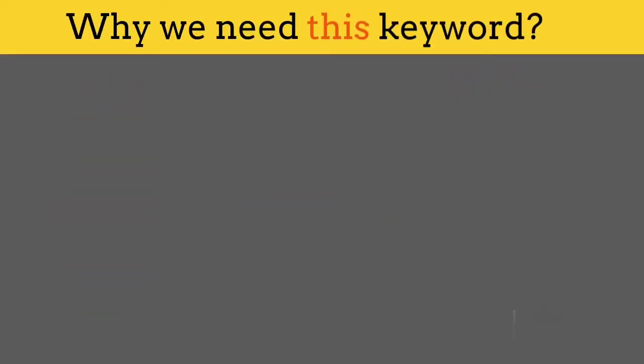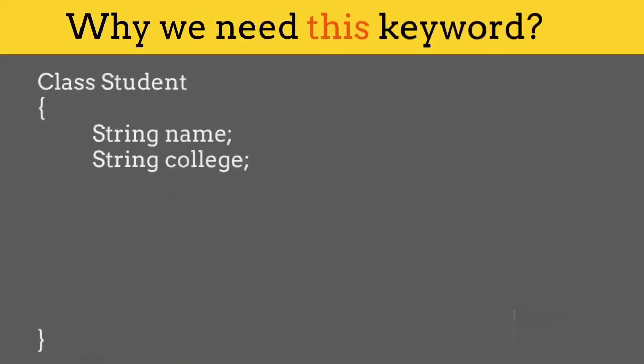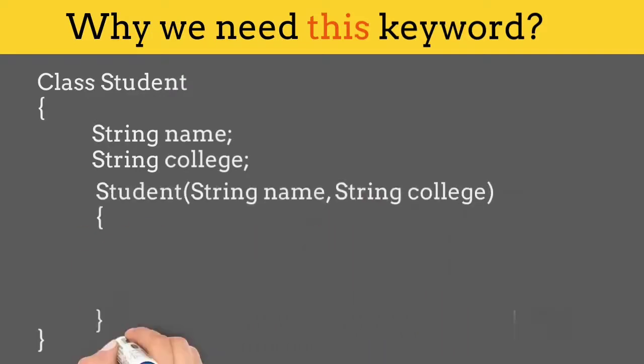Let's understand it with the help of an example. Consider a class student which has variables like name and college. Now I want to initialize these variables at the time of object creation. So for that I will create a constructor and pass two parameters to it. Let's consider the parameters as name and college.